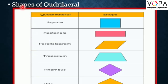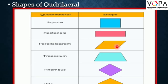Shapes of quadrilateral: Square — all sides are equal. Rectangle — opposite sides are congruent with each angle 90 degrees. Parallelogram — opposite sides are parallel. Trapezium — only two sides are parallel. Rhombus — all sides are congruent. In Kite — diagonals are perpendicular bisectors of each other.